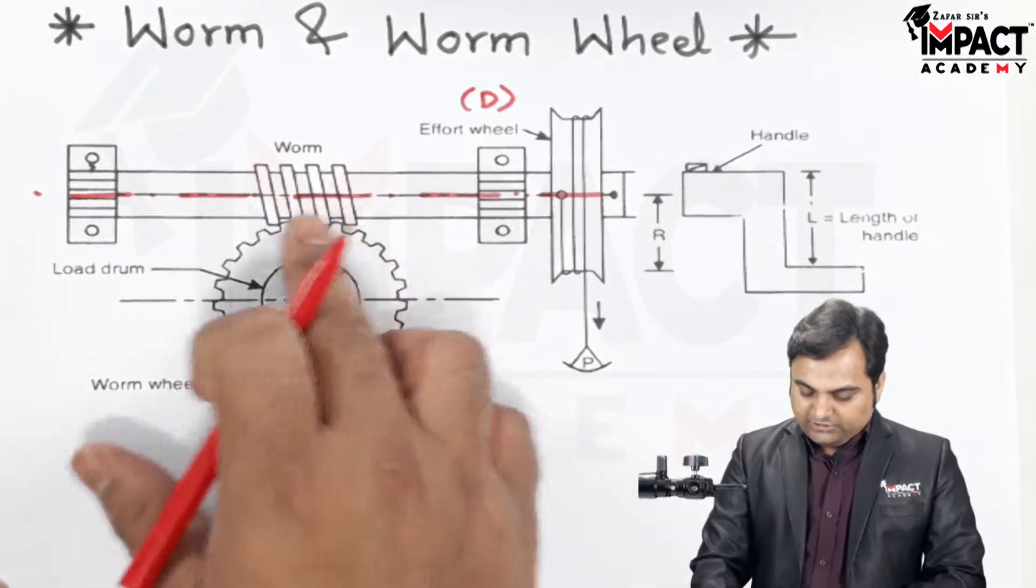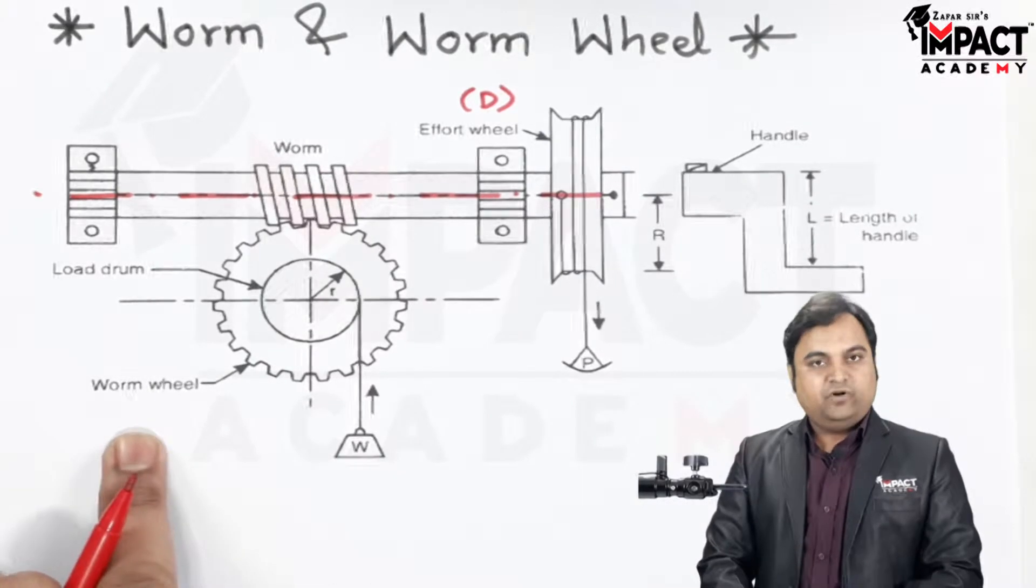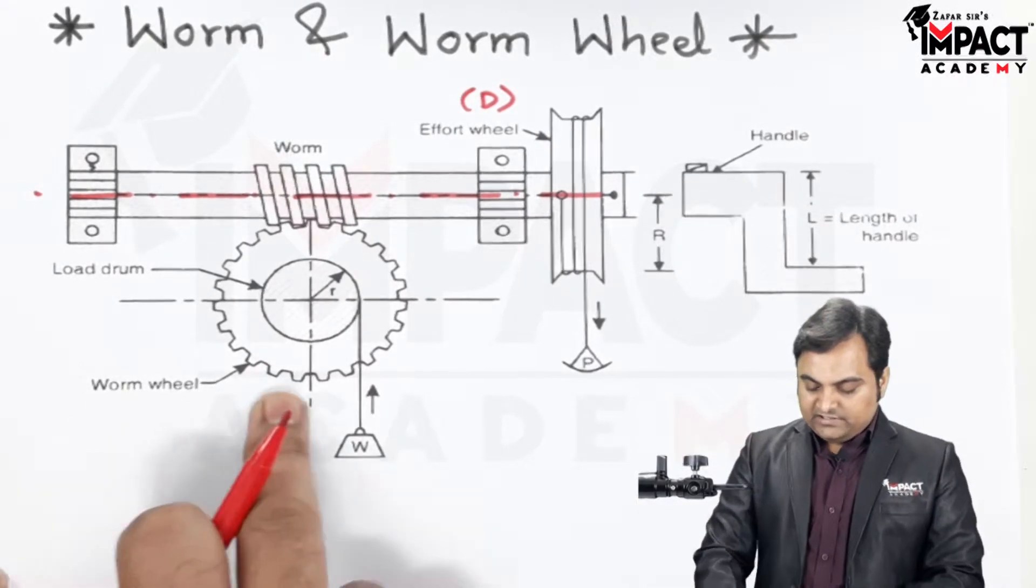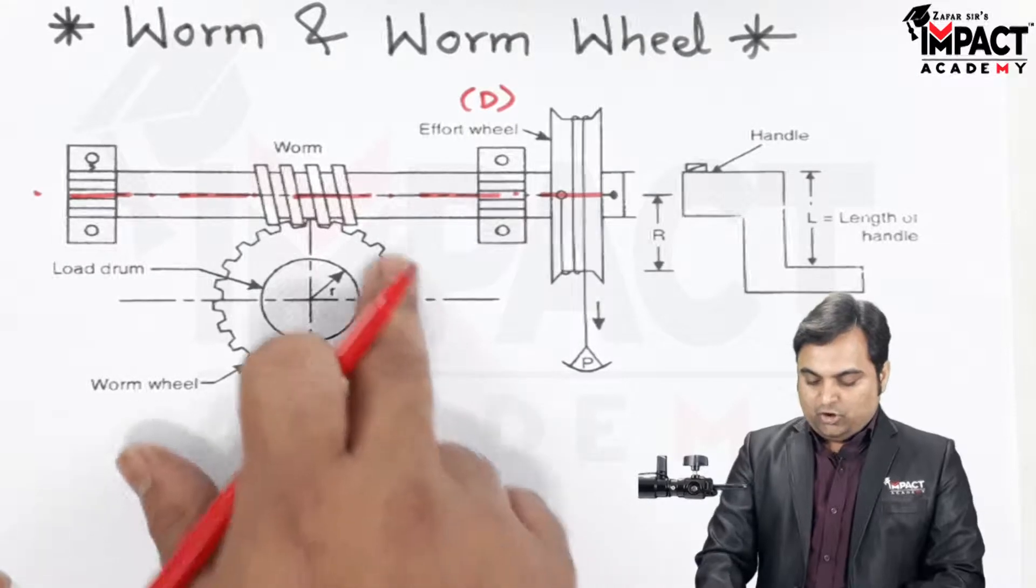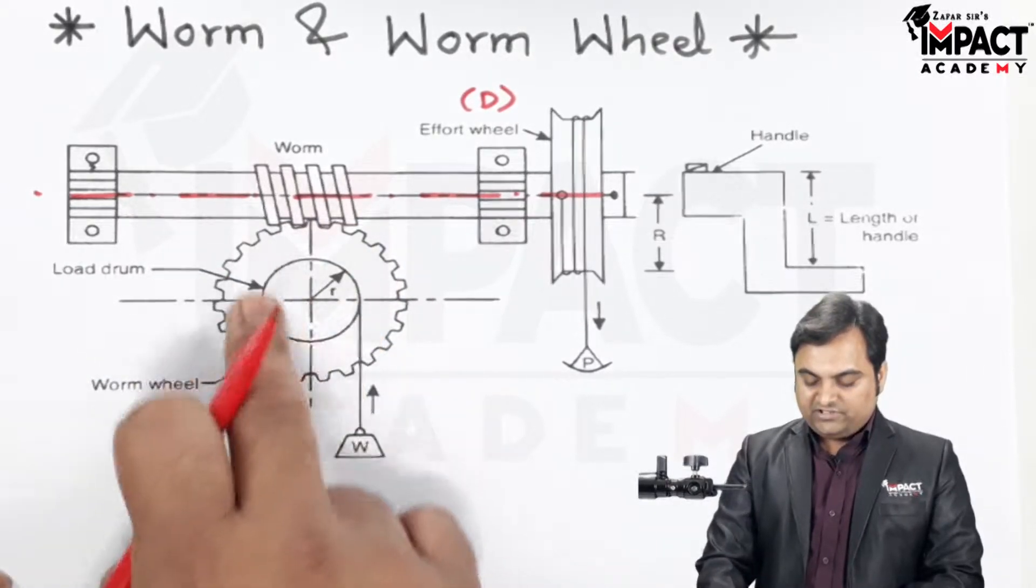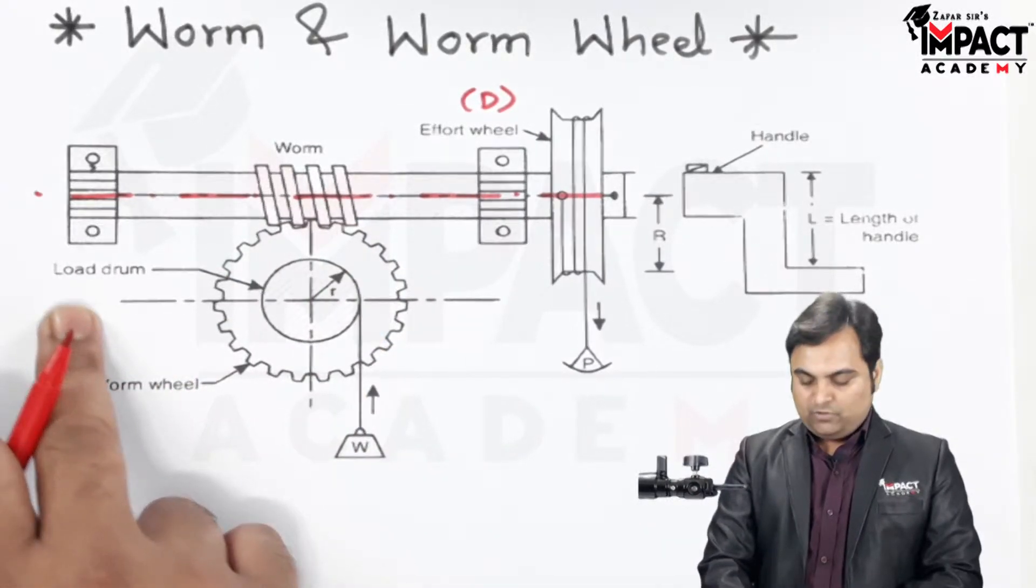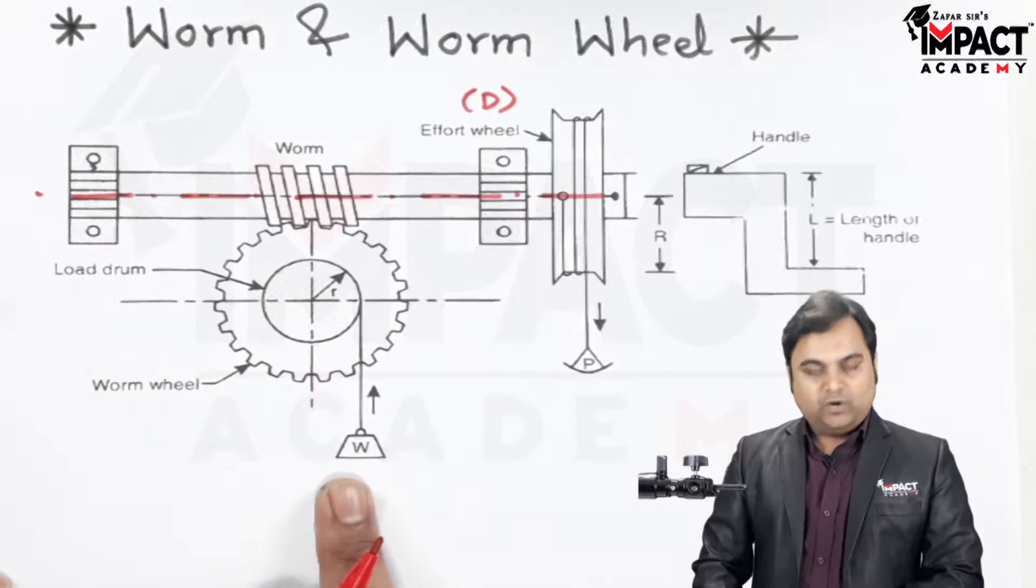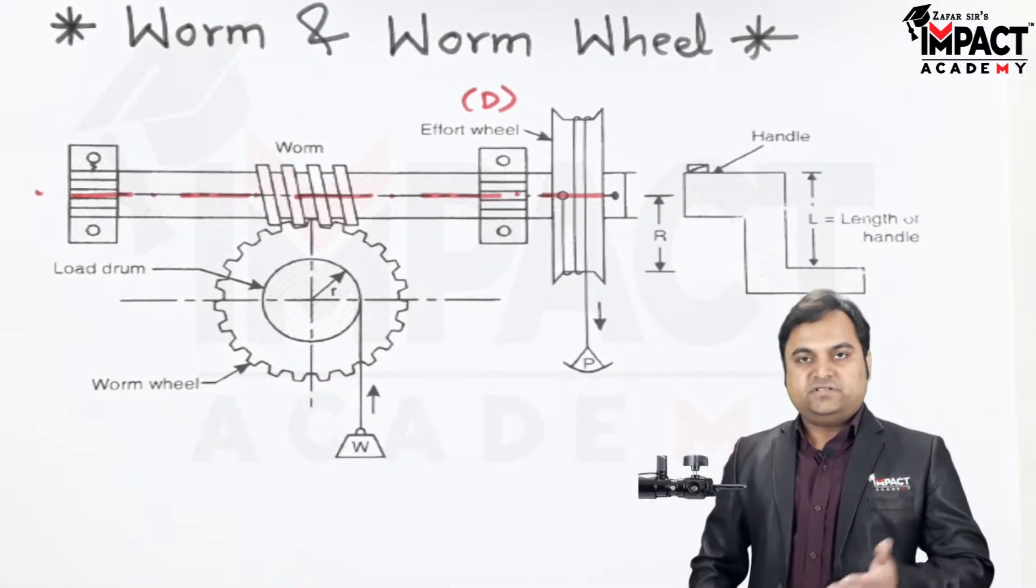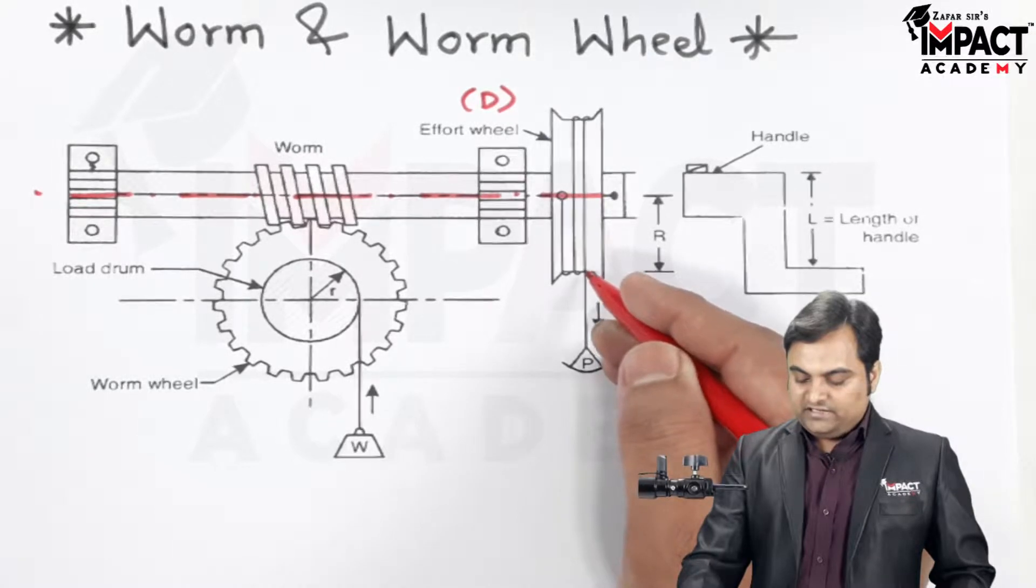The worm is in contact with a wheel called the worm wheel. The worm wheel has a number of teeth. On the same worm wheel, a shaft is connected called the load drum on which the load is wound. Now since this is a simple machine, by applying very little